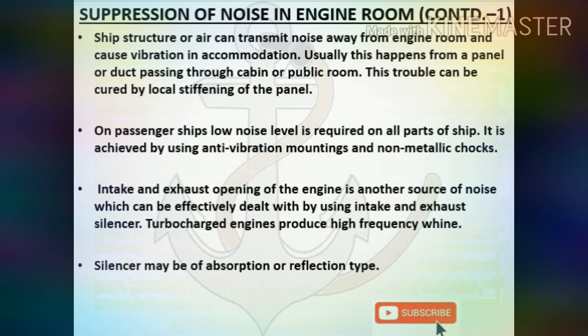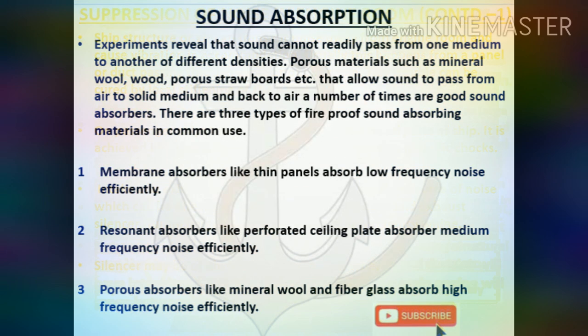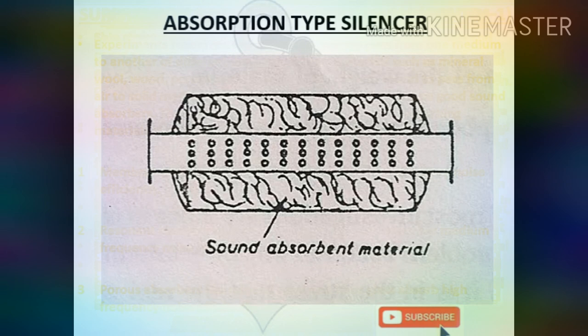Silencers may be of absorption or reflection type. Sound absorption experiments reveal that sound cannot readily pass from one medium to another of different densities. Porous materials such as mineral wool, wood, and porous straw boards that allow sound to pass from air to solid medium and back to air multiple times are good sound absorbers. There are three types of fireproof sound absorbing materials: membrane absorbers like thin panels absorb low frequency noise efficiently; resonant absorbers like perforated ceiling plate absorb medium frequency noise; porous absorbers like mineral wool and fiberglass absorb high frequency noise efficiently.